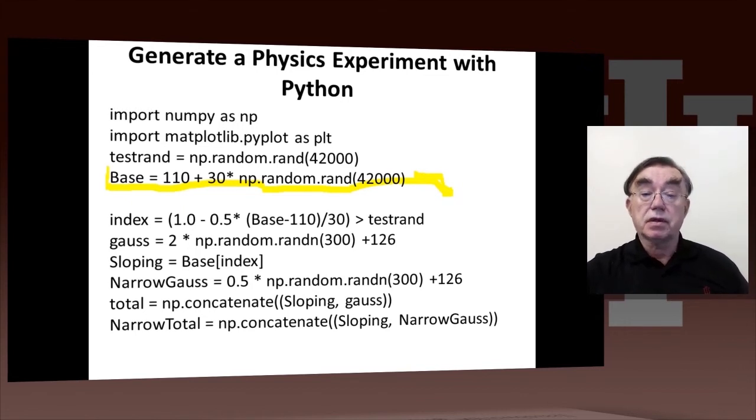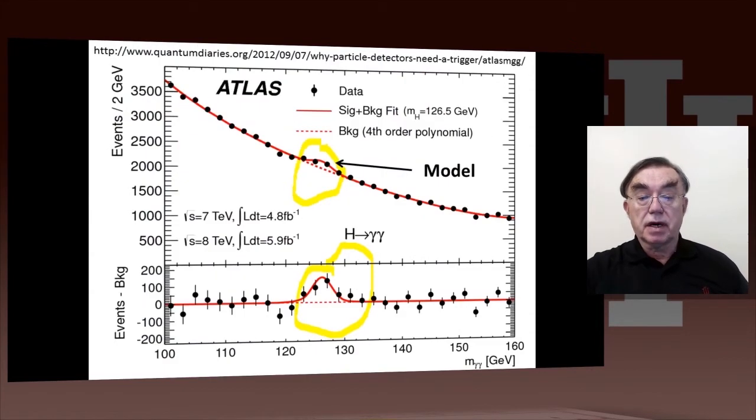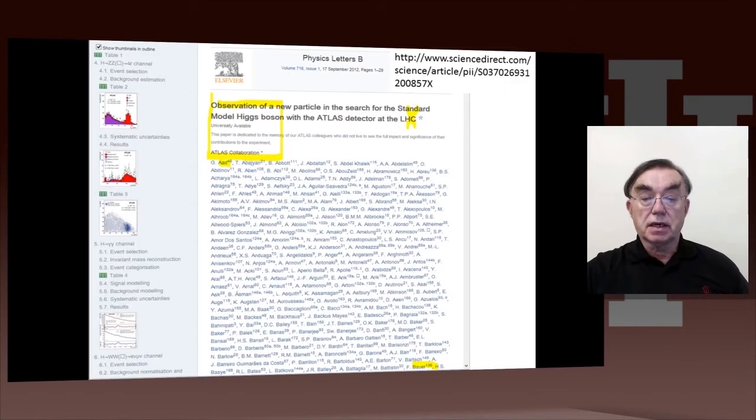And that's producing the so-called background. Remember, we looked at the previous picture. We had background and signal. Here's the signal. And so we're gonna generate each of those separately. Also notice the background, if I go from 110, I didn't bother to go the full range. I just did 110 to 140. The background is decreasing, and it's about half the size at 140 as it is at 110.